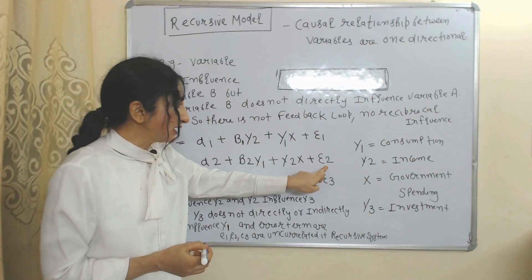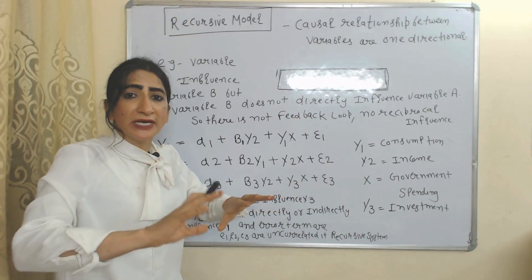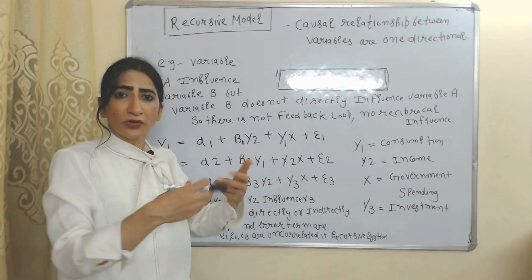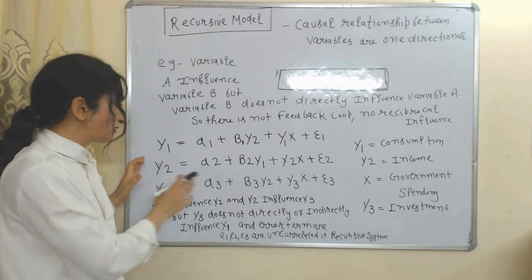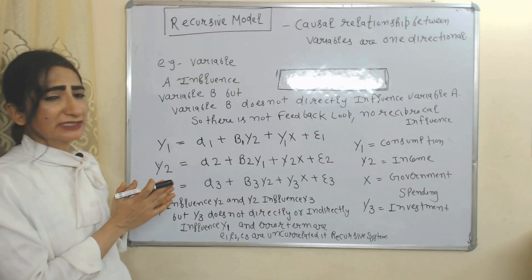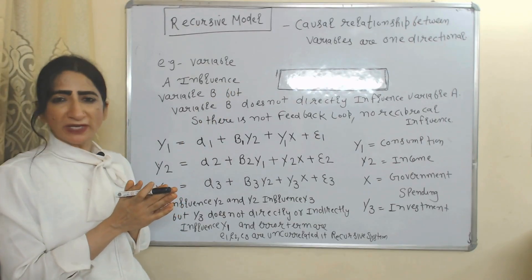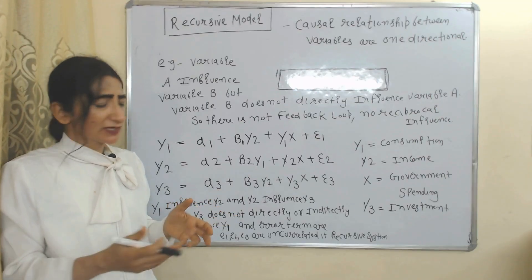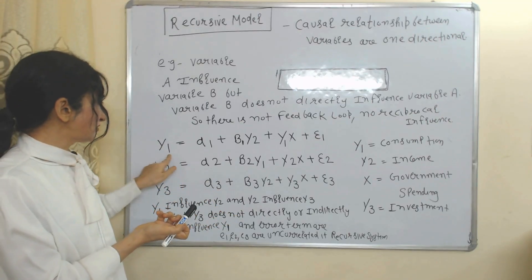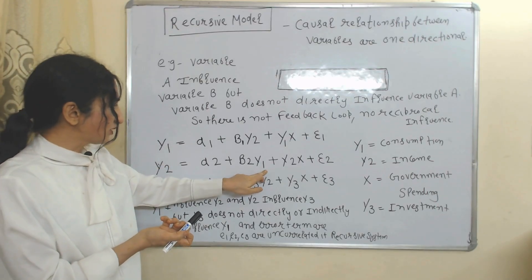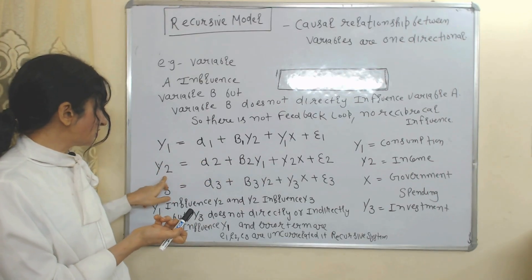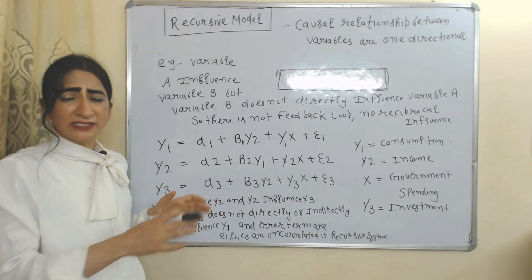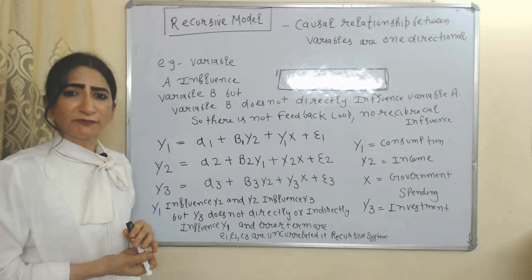Second, error terms E1, E2, and E3 are not correlated with each other. This is what makes it a recursive system — causal relationships between variables are one-directional, there are no feedback loops, and there is no reciprocal influence. You can easily solve this: calculate the value of Y1, put it in the second equation, then calculate Y2 and put it in the third equation.